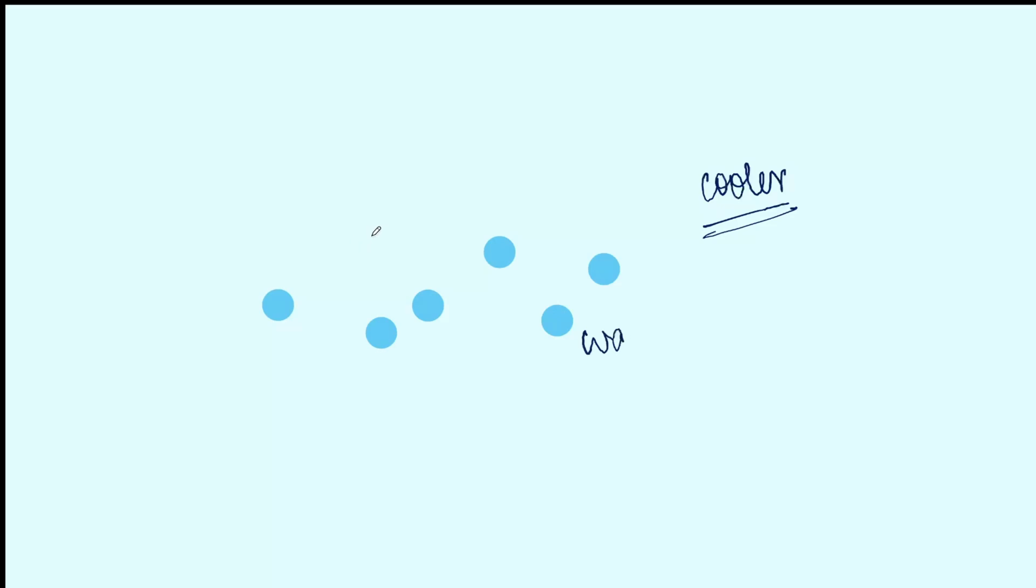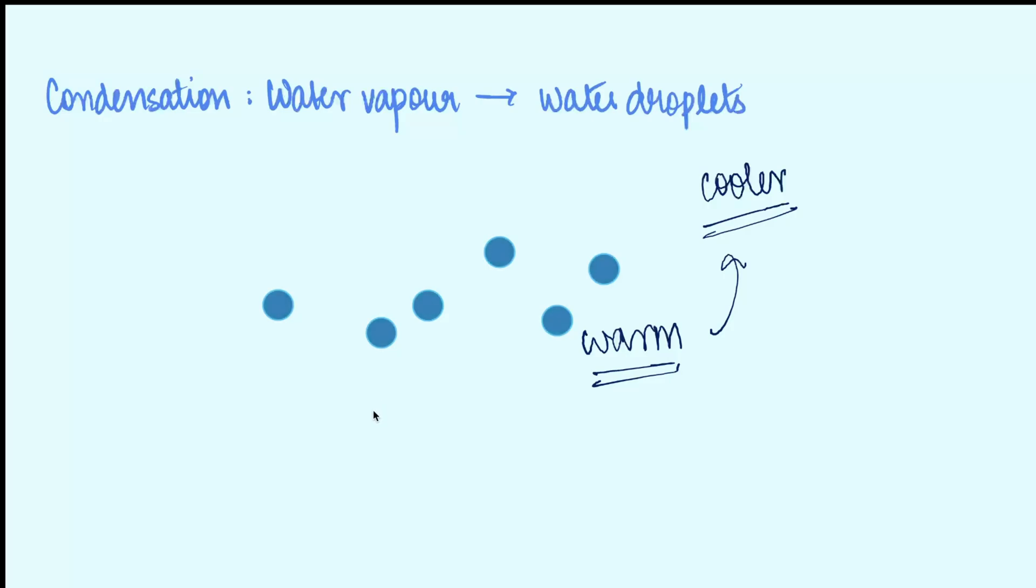So when warm water vapour reaches the cooler areas, it cools down forming water droplets by the process of condensation. So we know that condensation is the process of conversion of water vapour into water droplets.